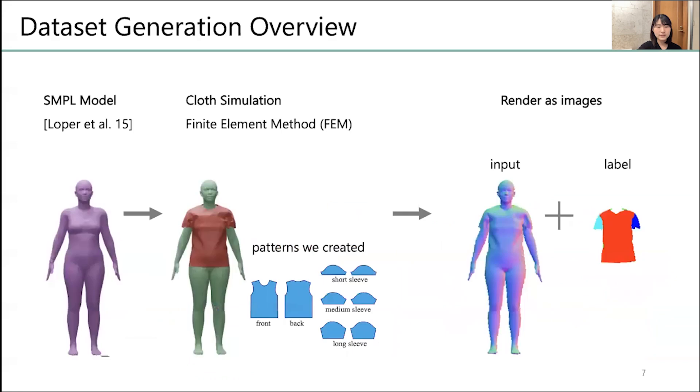This is a dataset generation overview. For dataset, we used SMPL model and our in-house clothing simulation method, and we created 3D mesh of clothed human. For clothing simulation, we used finite element method, or FEM, and the garment patterns we created. Then, the mesh model was rendered as a normal map and a color-coded pattern map.